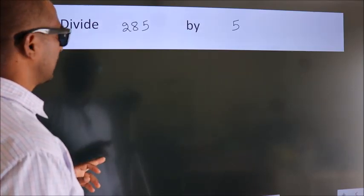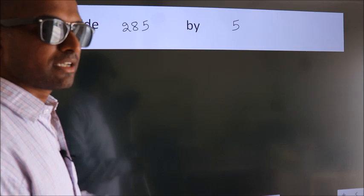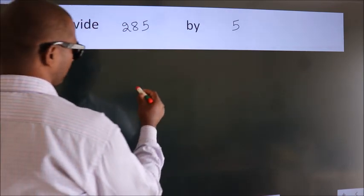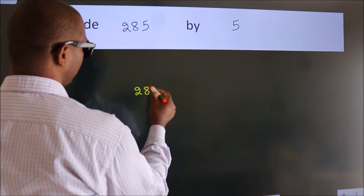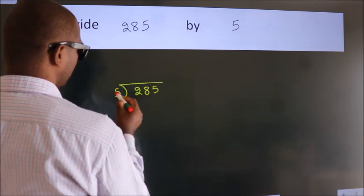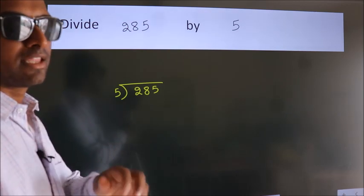Divide 285 by 5. To do this division, we should frame it in this way: 285 here, 5 here. This is step 1.